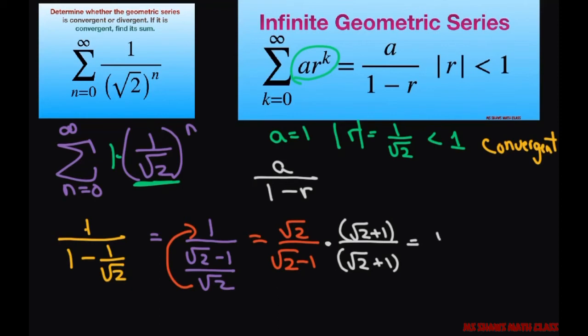So the numerator is going to be square root of 2 times square root of 2 plus 1. And the denominator is going to be, you use this a squared minus b squared. That's your a and b.